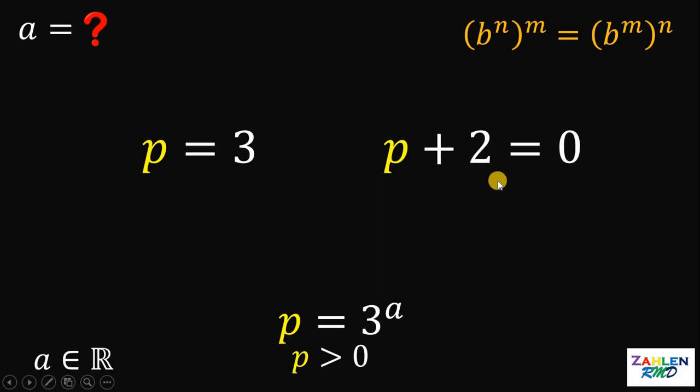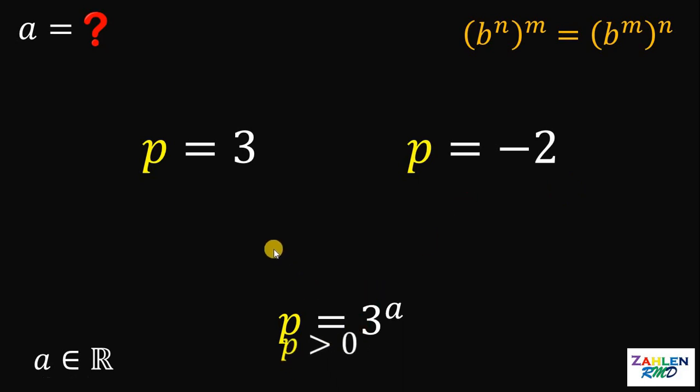On the second equation, if we subtract 2 on both sides, we get that the value of p must be equal to negative 2. Since p is greater than 0, we need to disregard the value of p as negative 2 because we know that p is greater than 0. Therefore, the only possible case is if p equals 3.